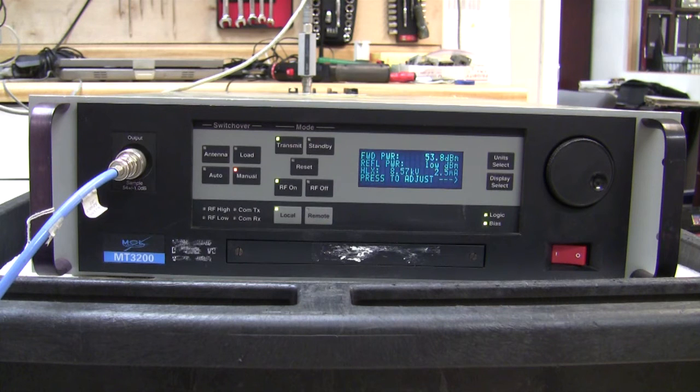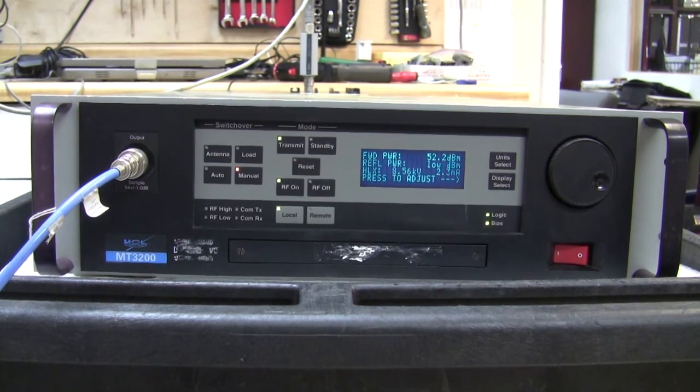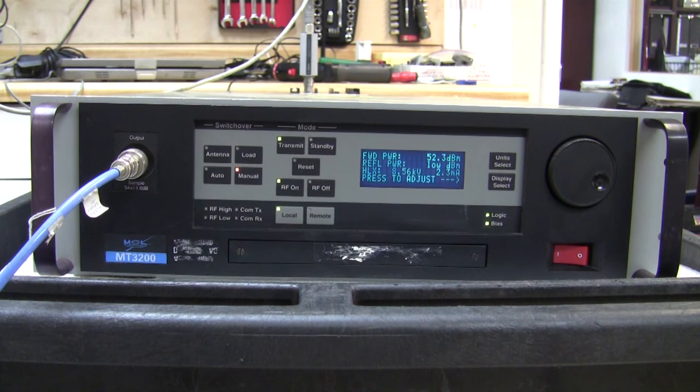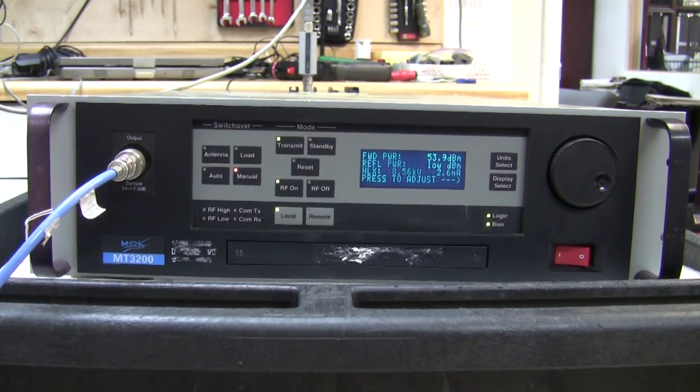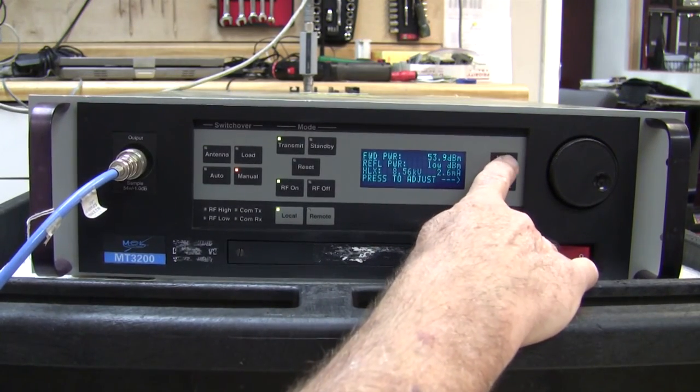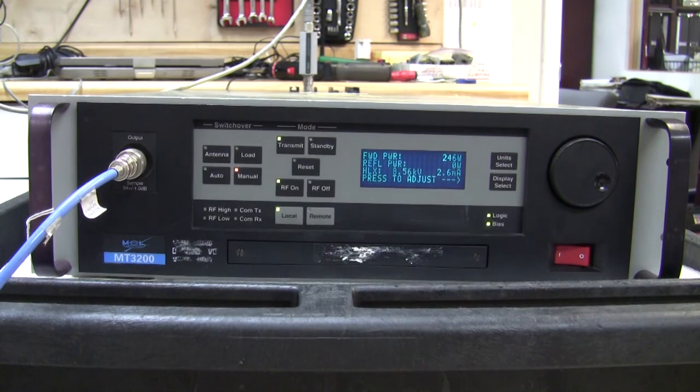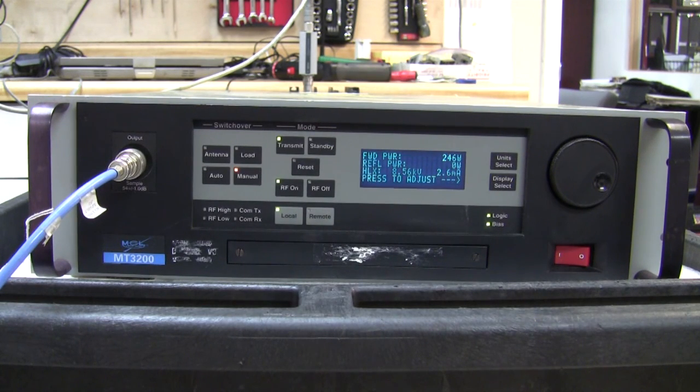So, now I'm going to run the same test at the bottom end of this amplifier's frequency, 13.75 gig. Now, we're coming up to the same power level. This time, at the lower end of the frequency range for this amplifier. So, I'm stepping through the input, watching the output, making sure that it stays in step. Again, at this frequency, saturation, 53.9. Let's look at that in watts. 245, 246 watts. Helix current, 2.6 milliamps. So, this amplifier is in good condition.